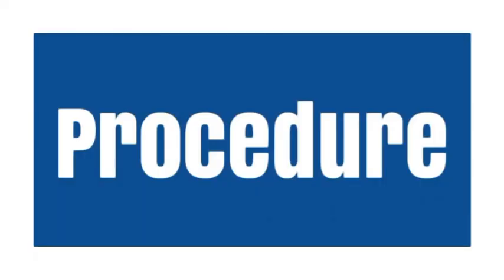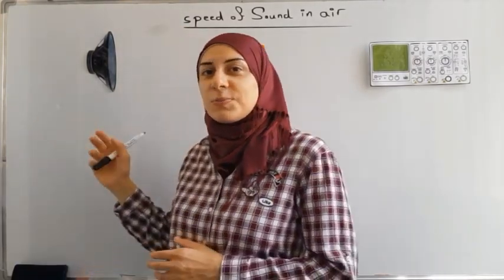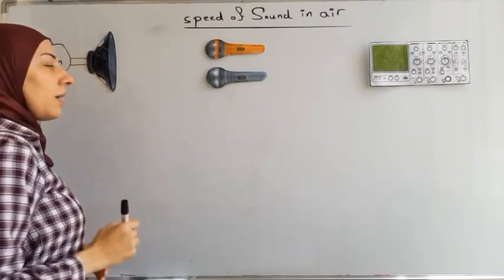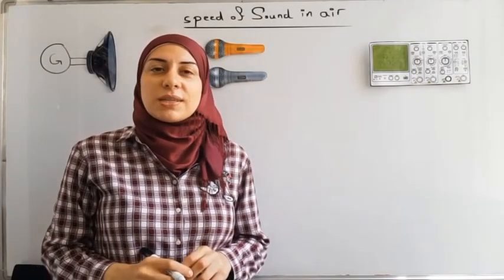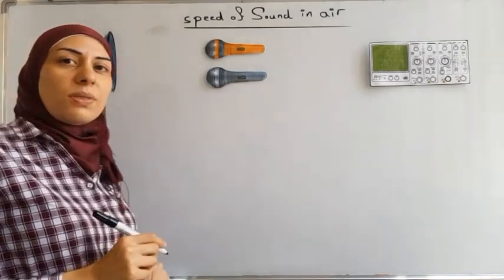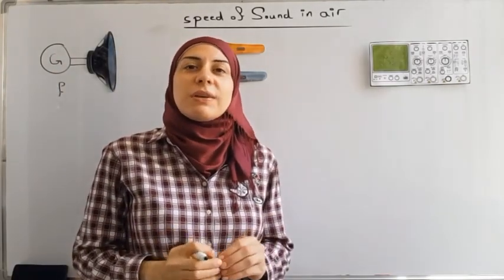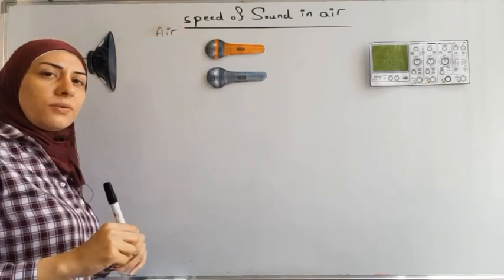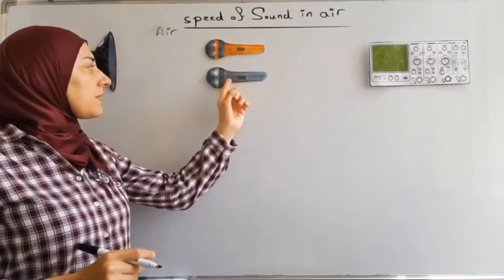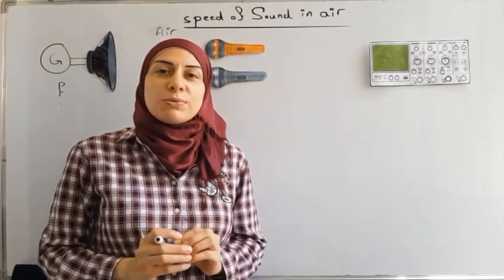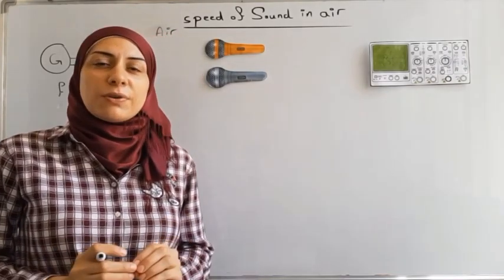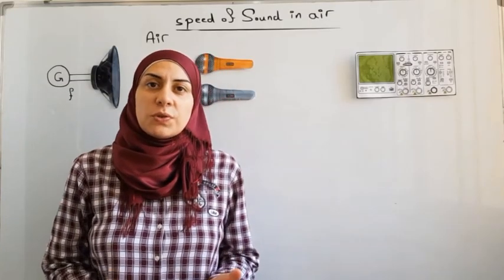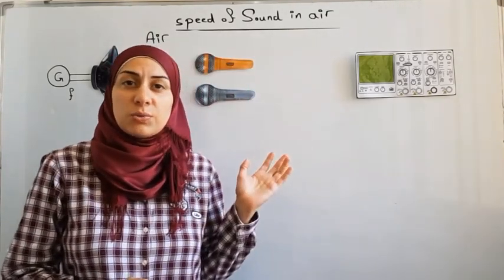We begin this method by connecting the loudspeaker to the function generator. The function generator produces a sinusoidal electric signal of frequency f. The loudspeaker then converts this electric signal into sound waves of the same frequency f. The sound waves travel through air until reaching the two microphones. The two microphones are placed side by side to capture the sound waves produced by the loudspeaker at the same instant. They then convert the sound waves of frequency f into electric signals of the same frequency f.